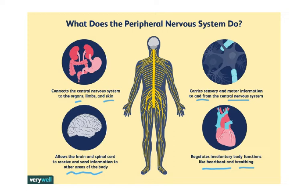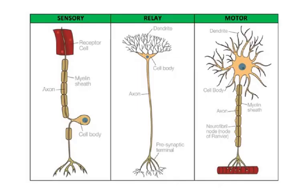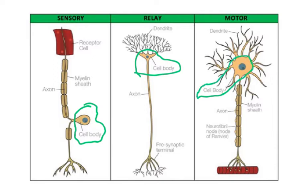The peripheral nervous system allows the brain and spinal cord to receive and send information to other areas of the body. The basic cell of the nervous system is called a neuron, and there are three types: sensory, relay, and motor neurons. Each neuron has a cell body — the part containing the nucleus.